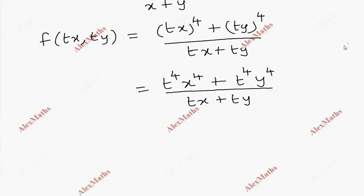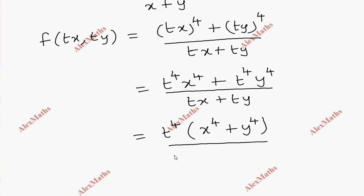The numerator gives t power 4 times x power 4 plus y power 4. The denominator gives t times x plus y. So t power 4 divided by t equals t cubed, times f(x, y).